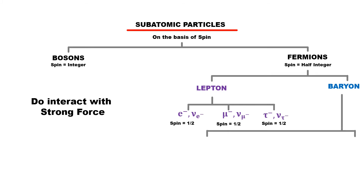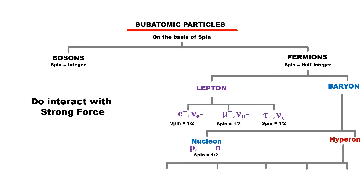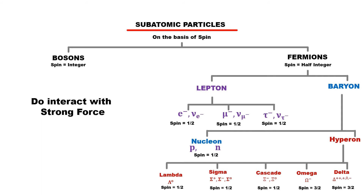Due to considerable variation in the mass of baryons, they have been divided into two parts. Light-mass baryons are called nucleons and heavy-mass baryons are called hyperons. Proton and neutron are nucleons, while lambda, sigma, cascade, omega, and delta baryons are hyperons. Only the omega-minus and delta baryon have spin 3/2, while the rest of the other baryons are fermions of spin 1/2.